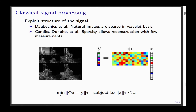Just compressing by multiplying by a short fat matrix is not something you can invert. But if you have the sparsity assumption, you can solve this inverse problem by assuming the sparsity level of your vector is smaller than some s, and the L1 norm of your vector is smaller than some s. Then you minimize the discrepancy to your observed data. That's a very classical idea from the early 2000s.